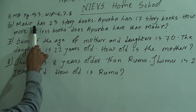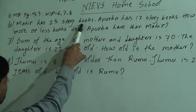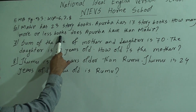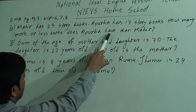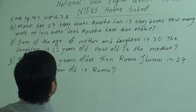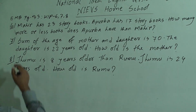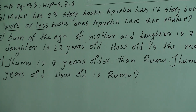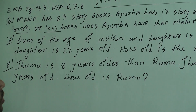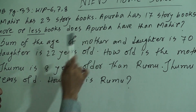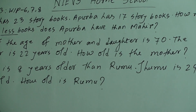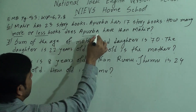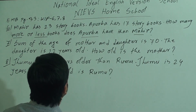Question 6: Mahir has 23 story books. Aparva has 17 story books. How many more or less books does Aparva have than Mahir? Here if you see 'more or less', we can't tell from the question alone. We have to compare Aparva with Mahir.